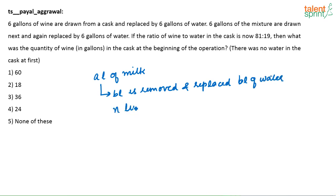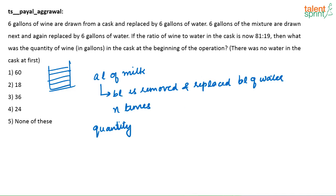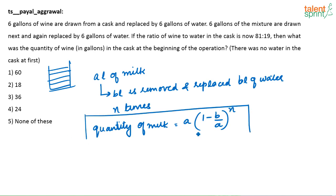If this process is done N times, then the quantity of milk — or the initial liquid that was present in the vessel — after all N operations will be nothing but A into (1 minus B by A) whole to the power of N. This is the formula for removal and replacement. Initially there was only milk in the vessel. I am removing B liters of milk and replacing it with B liters of water, and continuing this process for N times.